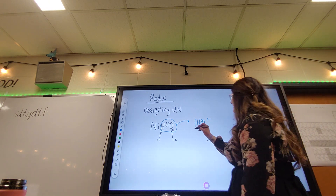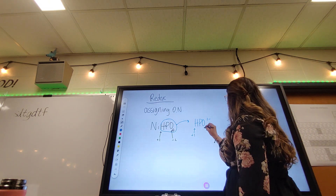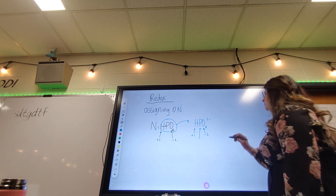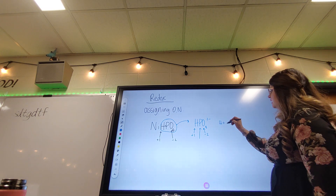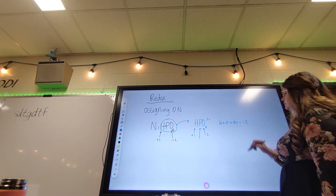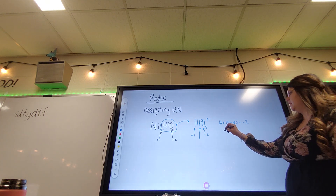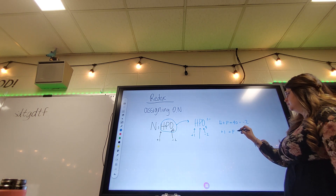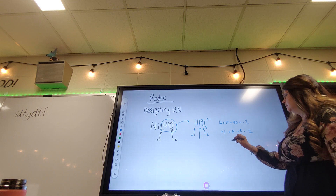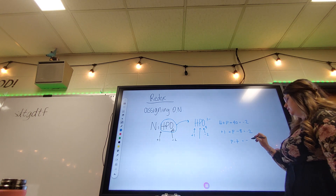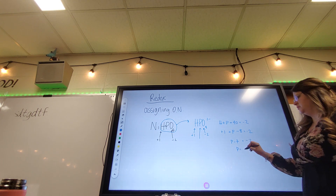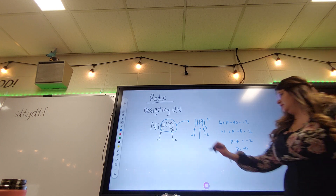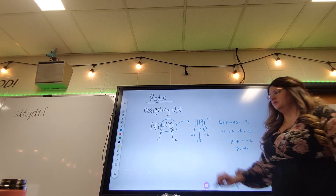So if we know we've got +1 and -2 and now only one unknown, we add everything up: +1 plus P minus 8 equals -2, so P minus 7 equals -2, and P equals +5. That's just some basic algebra done quickly.